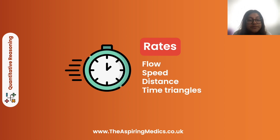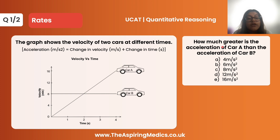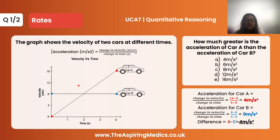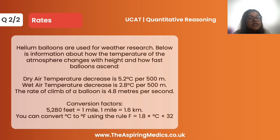Moving on to rates questions. This graph shows the velocity of two cars at different times, and gives the formula for acceleration: change in velocity over change in time. Car A's acceleration is 16 divided by 4 = 4 m/s². For car B, the velocity is constant (horizontal line), so the change in velocity is 0, giving an acceleration of 0 m/s². The difference in acceleration is therefore 4 m/s², which is option A.